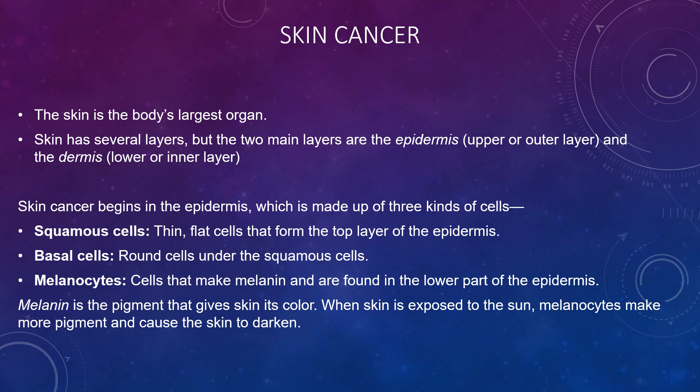Skin cancer: the skin is the body's largest organ. It has several layers, but the two main layers are the epidermis (the upper layer) and the dermis (the lower inner layer). Skin cancer begins in the epidermis, which is made up of three types of cells: squamous cells (thin flat cells forming the top layer), basal cells (round cells under the squamous cells), and melanocytes (cells that make melanin, found in the lower epidermis). Melanin is the pigment that gives skin its colour; when skin is exposed to the sun, melanocytes make more pigment and the skin darkens.